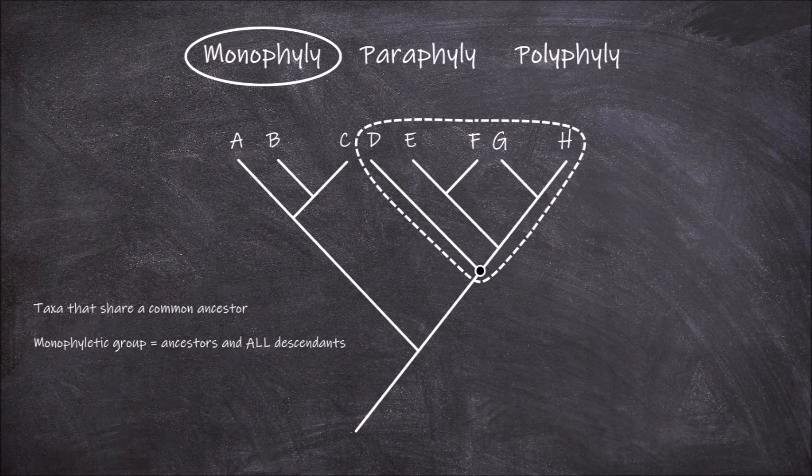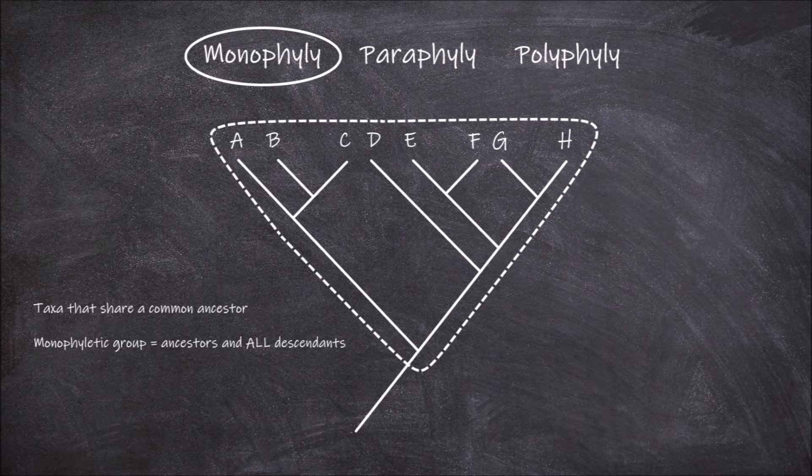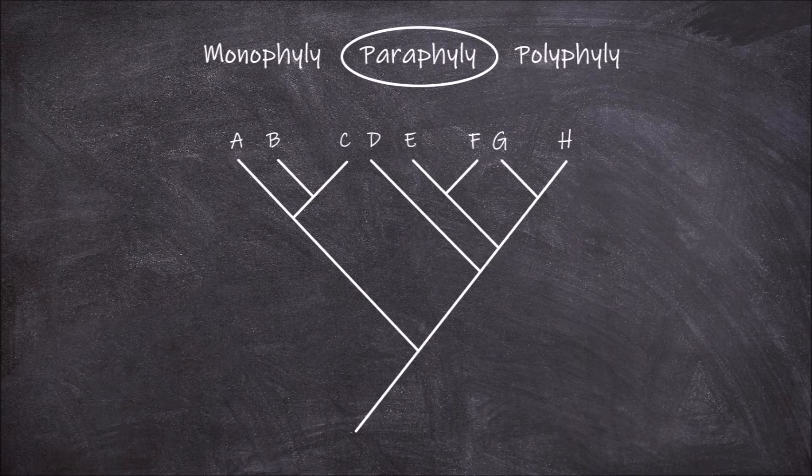As well as D, E, F, G, and H. All taxa A through H belong to a larger monophyletic group at this node. The second type of phylogenetic relationship we're going to go over is paraphyly.